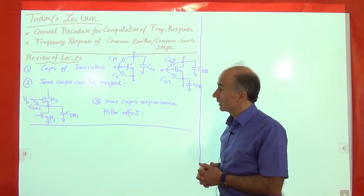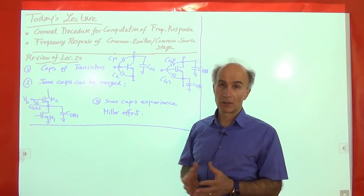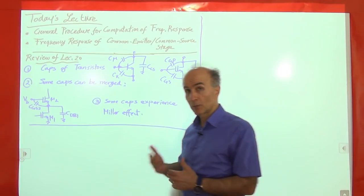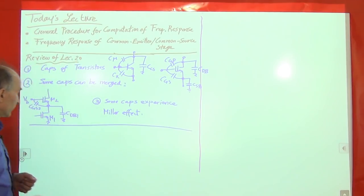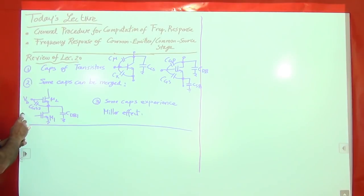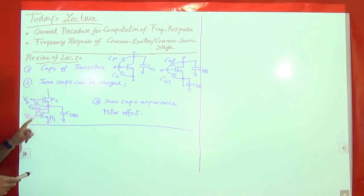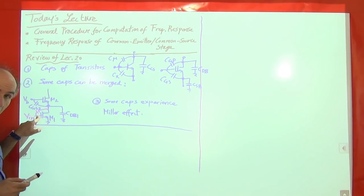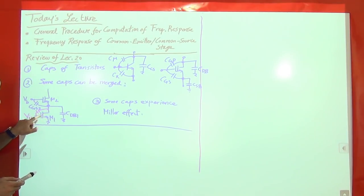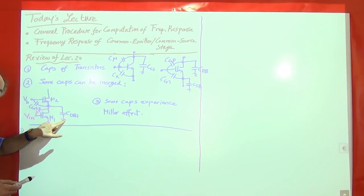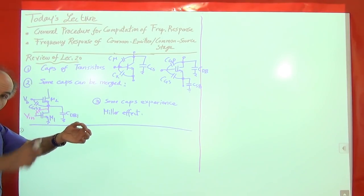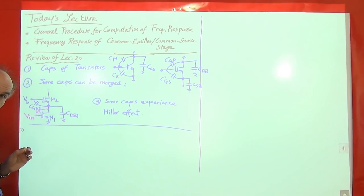We also saw that some capacitors in the circuit experience Miller effect and some don't. Before we jump into equations, it's good to identify which ones do. For example, M1 has a capacitance between its gate and drain, C_GD1, and that capacitance does experience Miller effect because there's a signal at both terminals. But capacitors that go from the signal path to ground do not experience Miller effect, because they don't go from one point in the signal path to another.